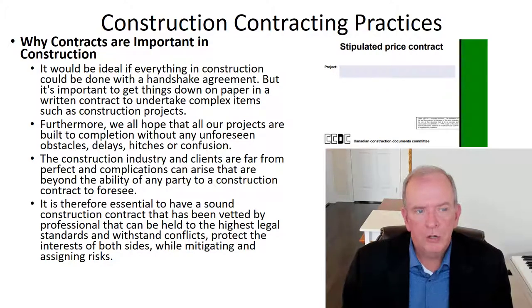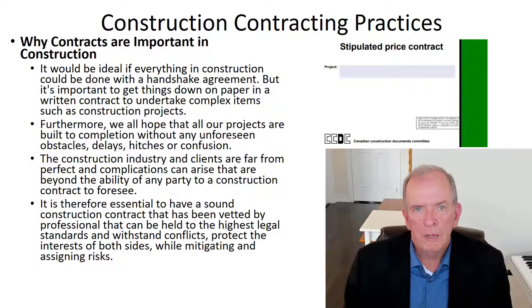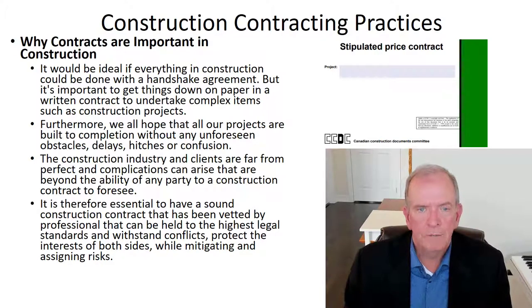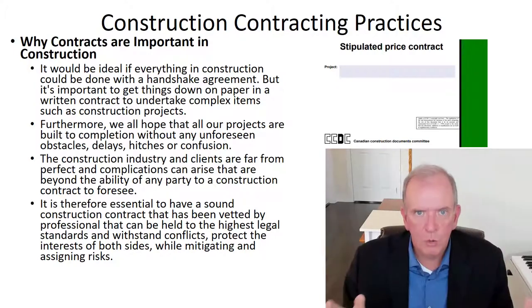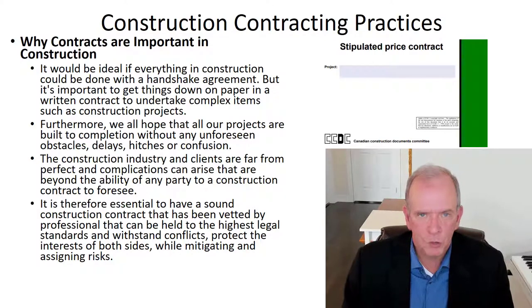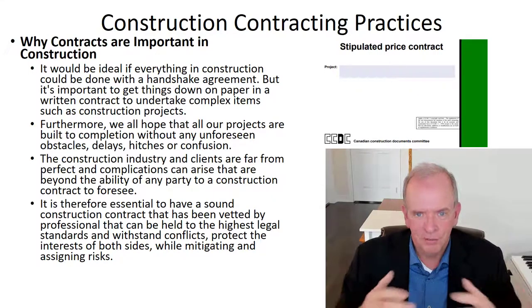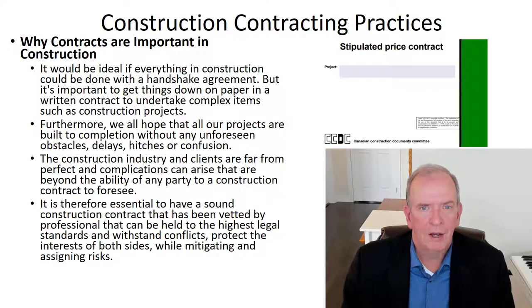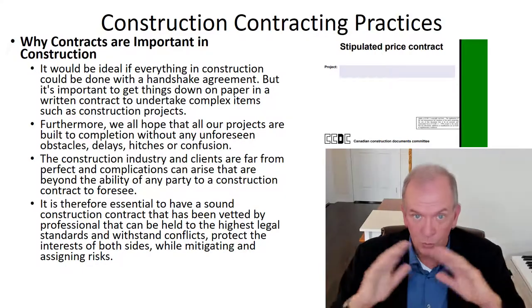Why construction contracts are important: in Canada, we use CCDC documents — the Canadian Construction Documents Committee. A typical CCDC2 contract is for a lump sum type project, where the buyer wants to know exactly what it's going to cost before entering into an agreement. It's a pretty common type of contract, although it's been getting less common in recent years because of the complexity in construction projects. The lump sum price can be undermined when you have to make many changes because the scope wasn't well defined.